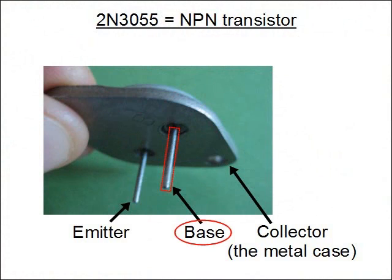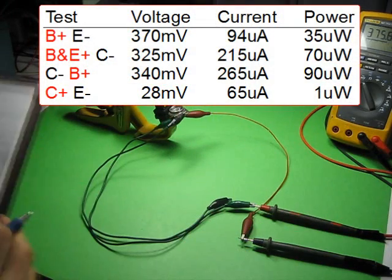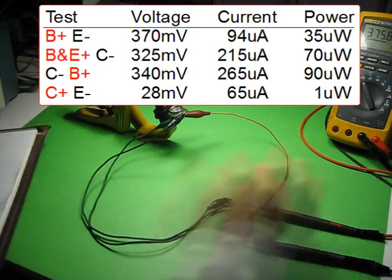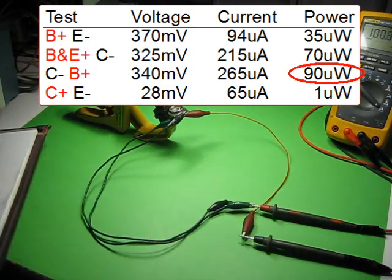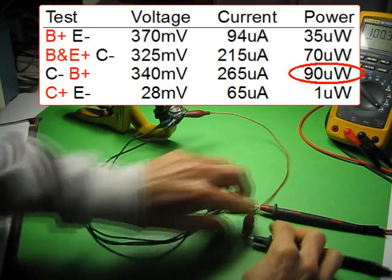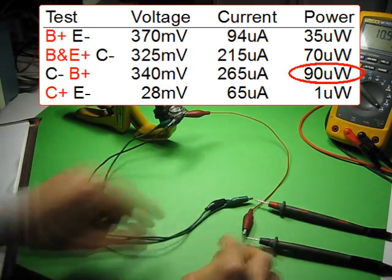Why did I connect to just the base and collector for each transistor and ignore the emitter? Well, as I showed in my previous video, I did tests of the various possible wiring combinations. And using just the base and collector gave the best results. I again confirmed this with a few more transistors and got the same results.